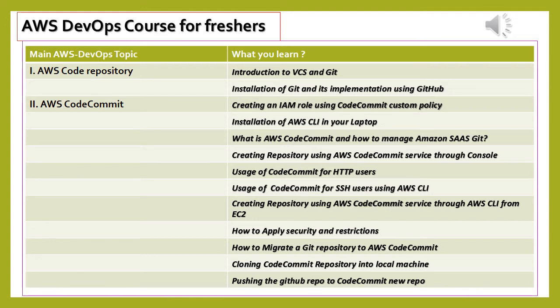How to apply security and restrictions: you will learn different policies and how to use them for the right security. How to migrate a Git Repository to AWS Code Commit: you have created in a past session a GitHub account and a repository, and uploaded objects into the Code Repository.